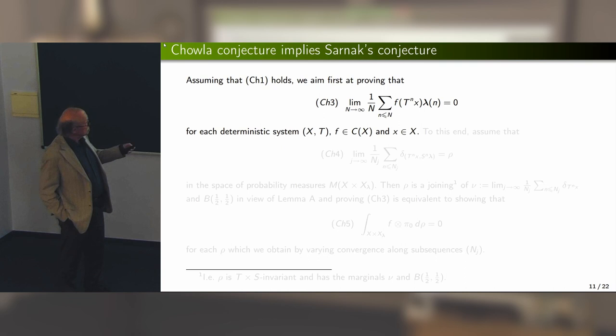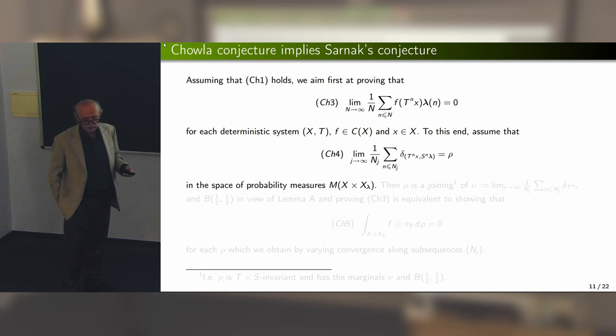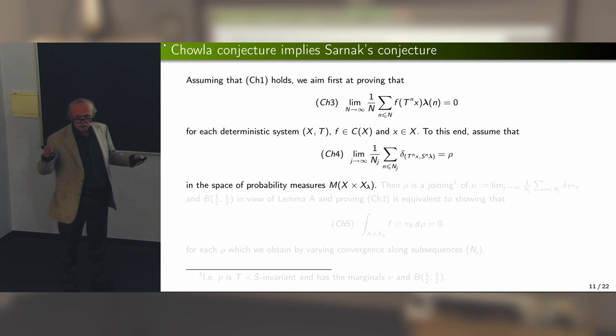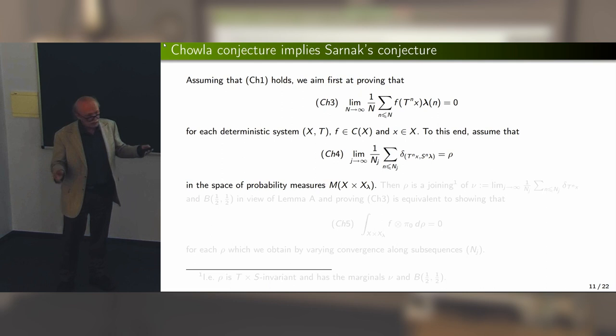We have a deterministic topological dynamical system, a point x, and a continuous function f. We treat lambda (Liouville) as a point in our subshift space as usual. We are in the product space X × X_lambda. In that space, we can consider the point (x, lambda) and look at empirical measures under the product transformation T × S. Going to a limit along a subsequence, we obtain a measure which is T × S-invariant.